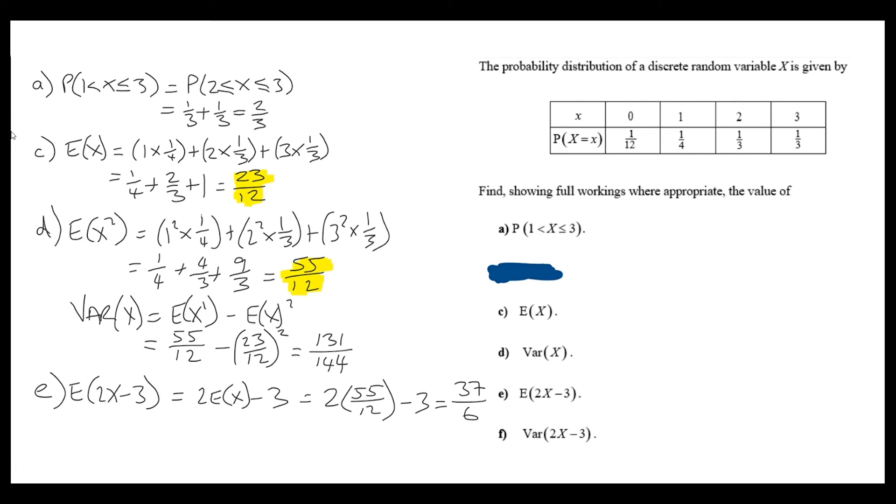Remember, with the expectation, all of these linear operations need to be applied: the multiplication or division, the addition and subtraction. When it comes to the variance, however, we can ignore any adding and subtracting. So the variance of 2x minus 3 is exactly the same as the variance of 2x.